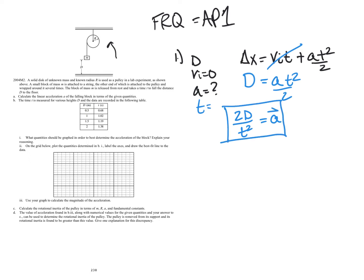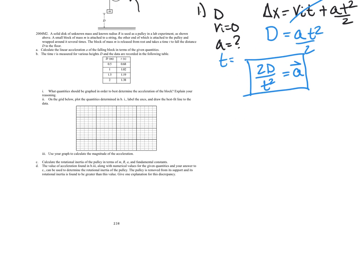So I think that is an acceptable answer for part one. Let's look at B. So this would be A. Now B is the time measured for the various heights D, and the data are recorded in the following table, so we have a data table of distance versus time. What quantity should be graphed in order to best determine the acceleration of the block? Well, acceleration, the units are meters per second squared.